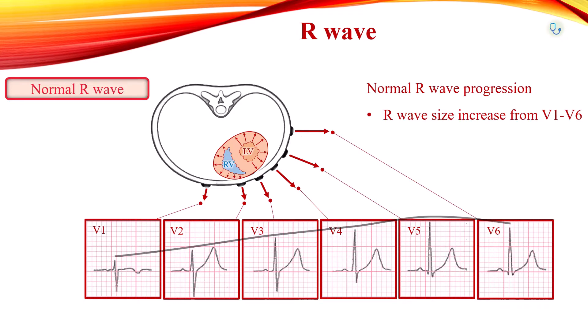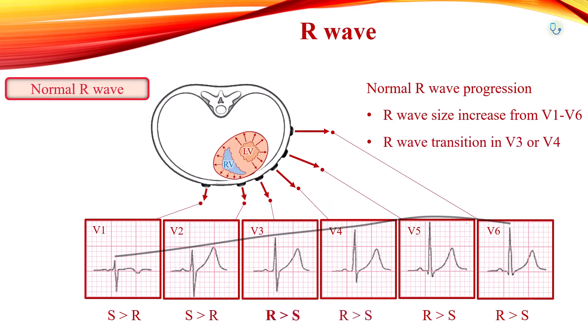In V1 and V2, S-waves have greater amplitude than R-waves, and in V5 and V6, R-waves have greater amplitude. R-wave transition, which is the transition from S greater than R to R greater than S, should occur in V3 or V4.